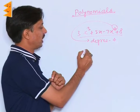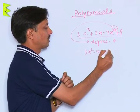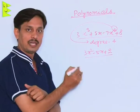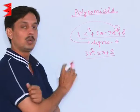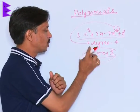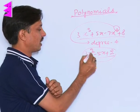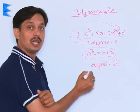Suppose I write a polynomial like 3x² - 5x + 2. I can tell you here the highest power is what? 2. So this highest power is 2. So what can I say? I can say the degree of this polynomial is 2.